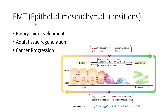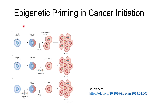The EMT process is initiated by signaling — it receives signals from different factors, which could include epigenetic variations. These signals are usually dysregulated or enhanced in order to convert epithelial cells to mesenchymal cells. This summarizes how EMT relates to cancer progression.